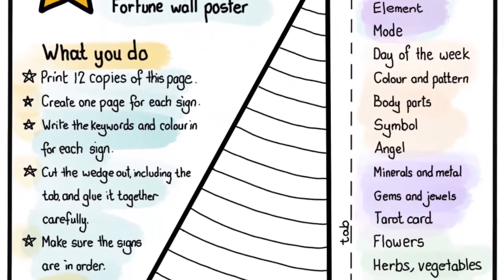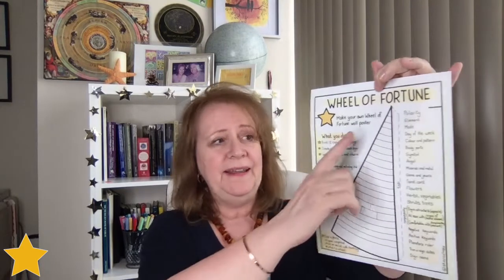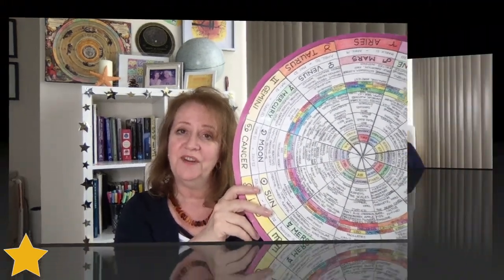Below this video is the PDF download — you can click through and get it. It's going to look like this: this will be the Wheel of Fortune page, and you will print 12 of them, one for each sign of the zodiac. You fill in the segment with all the information about the sign, then it gets cut out including the tab on the side along the dotted line. Then we join all of them together in the correct order, gluing them with sellotape, and back it on a piece of cardboard. This astro art then hangs on your wall.